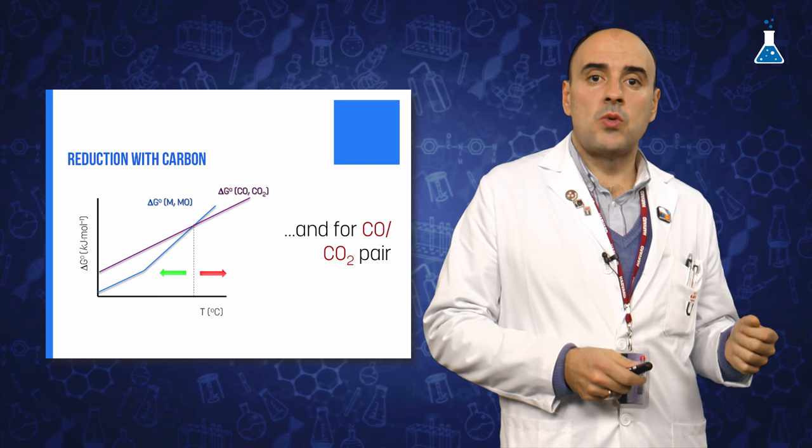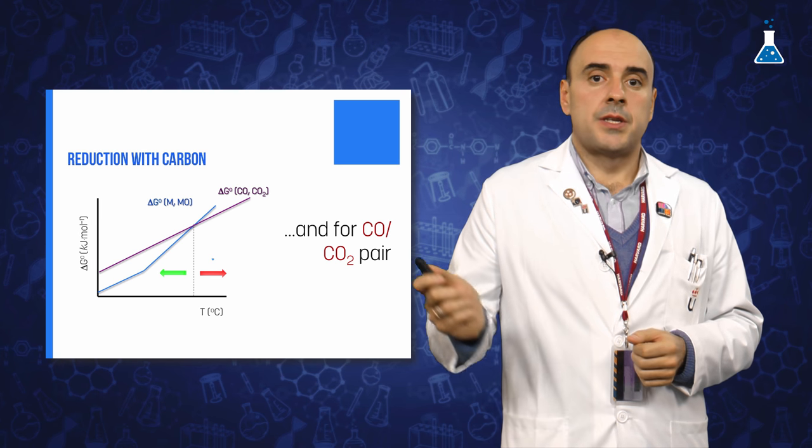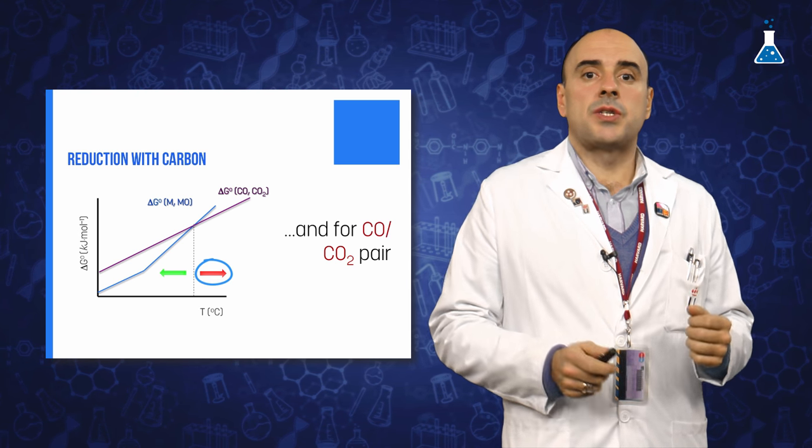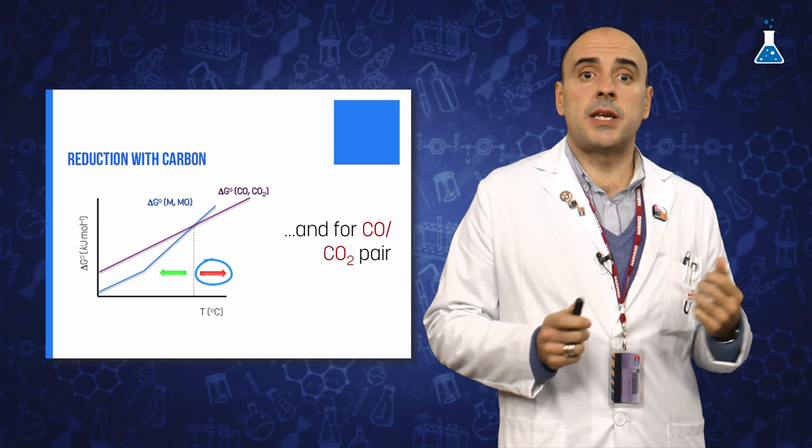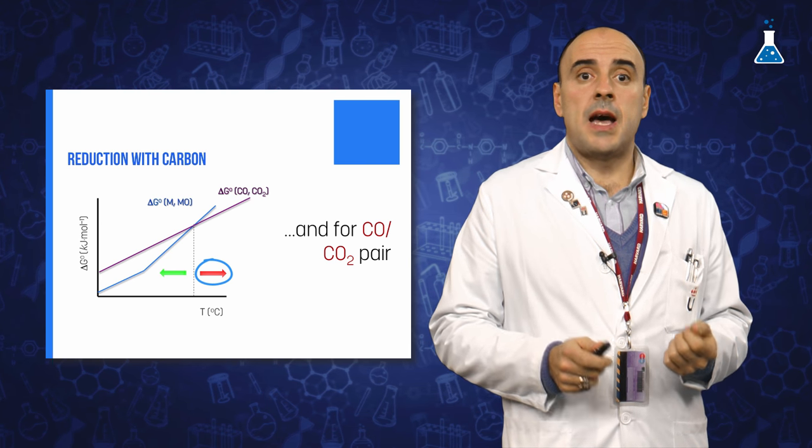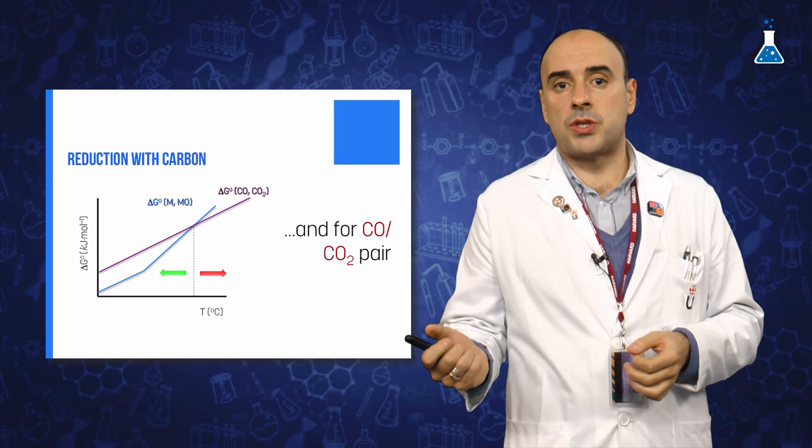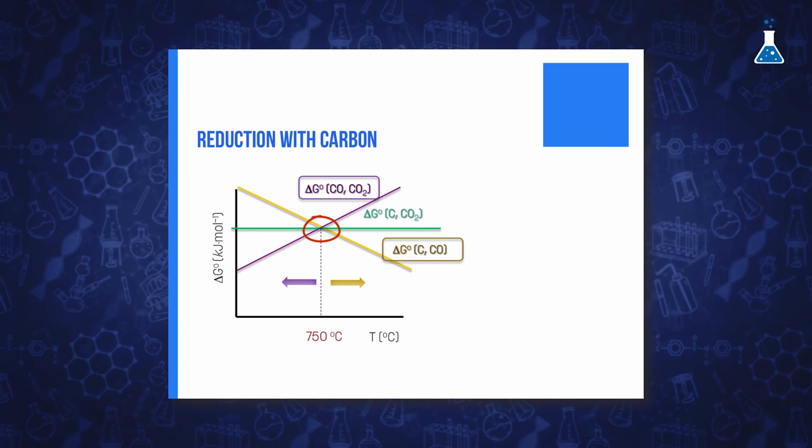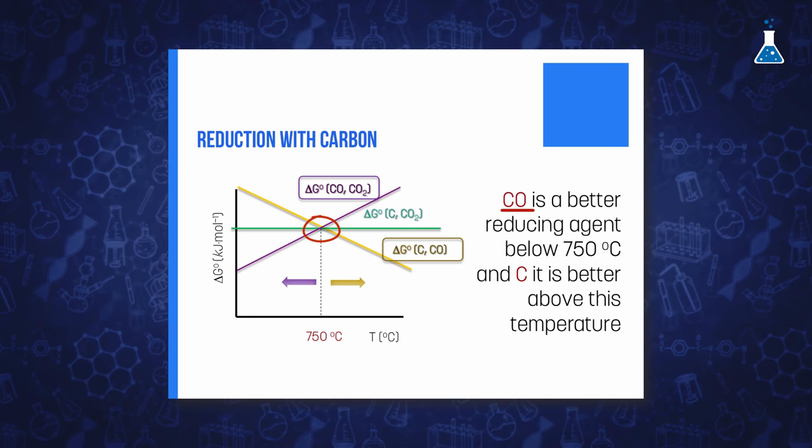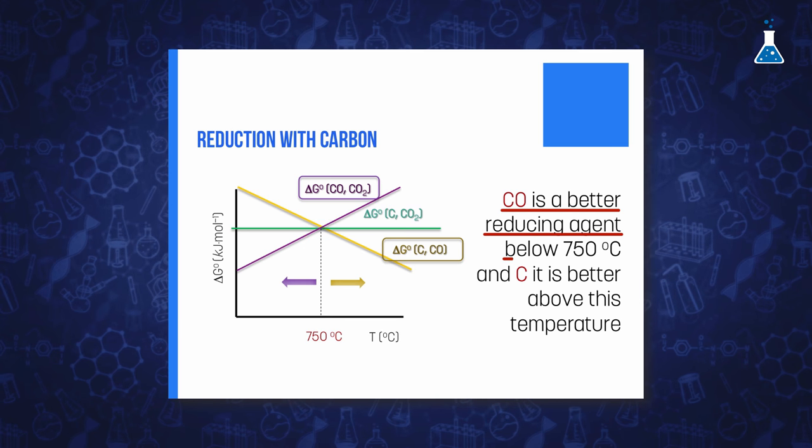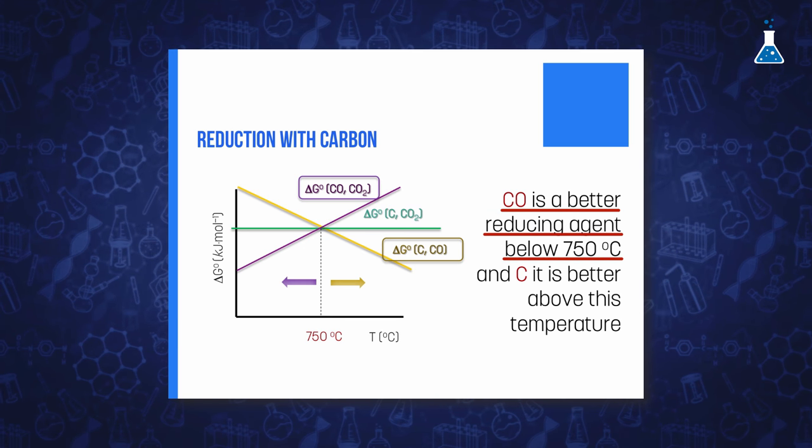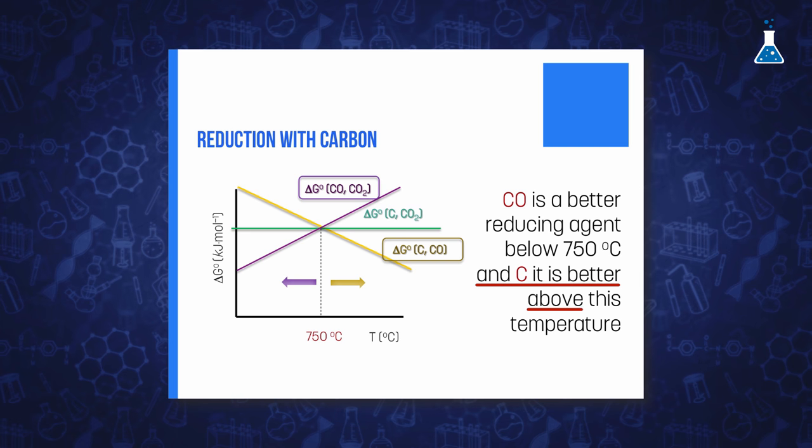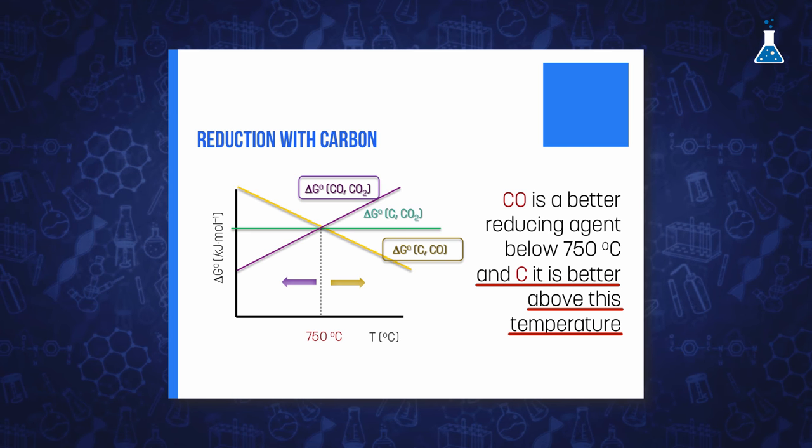Analogously, for temperatures at which the CO2 line lies below the metal oxide line, carbon monoxide can reduce the metal and be oxidized to carbon dioxide. The three lines intersect at 710 Celsius. So, carbon monoxide is a better reducing agent below this temperature and carbon is a better reducing agent above this temperature.